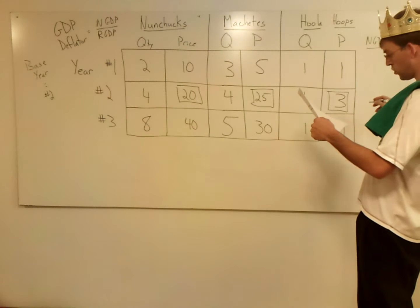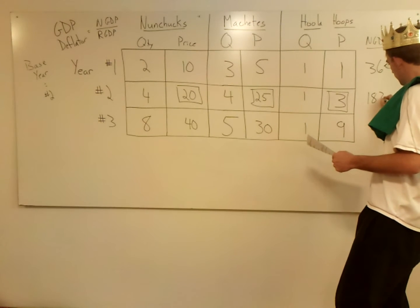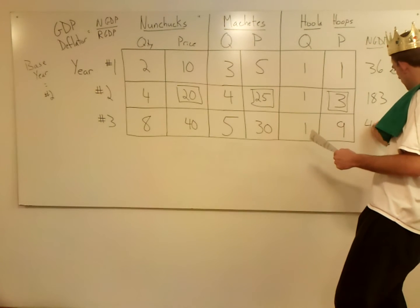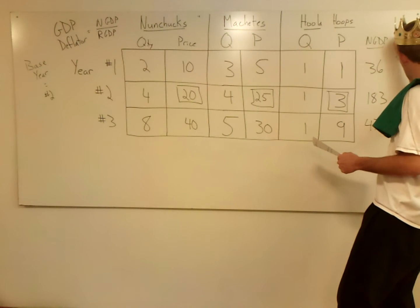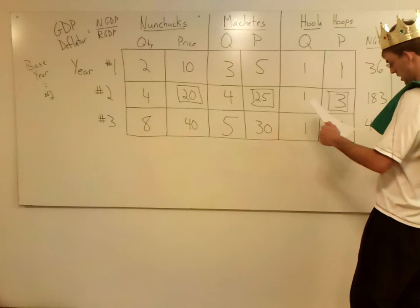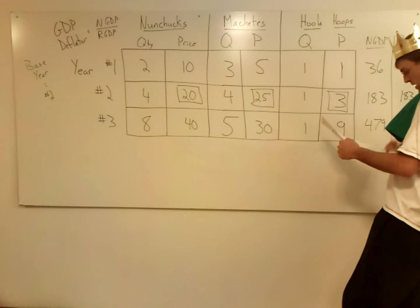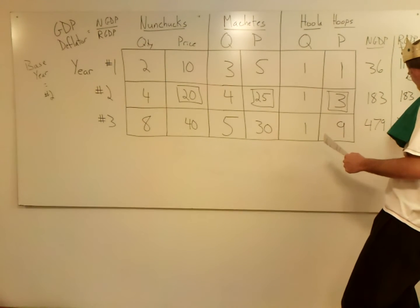Nominal GDP year one, I have 36, 183 for year two, and 479 for year three. My real GDPs are 118, 183, and 288.